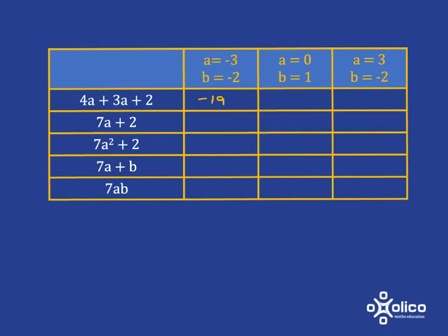When a is 0, we're going to get 0 plus 0 plus 2, which is 2. And when a is 3, we're going to get 12 plus 9, which is 21, plus 2, which is 23.